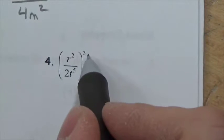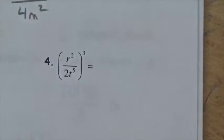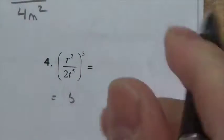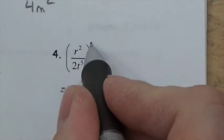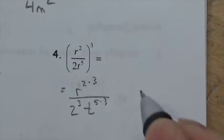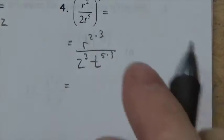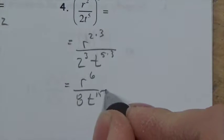For (r squared over 2 t to the fifth) cubed: the exponent distributes to all factors being multiplied or divided — as long as there's no binomial. This becomes r to the 2 times 3, 2 cubed, t to the 5 times 3. Simplifying: r to the sixth, 8, t to the fifteenth — giving 8r to the sixth t to the fifteenth.